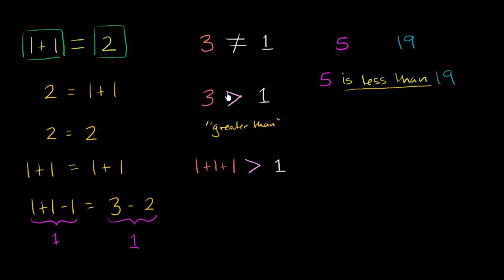And so we just have to think of a mathematical notation for writing is less than. Well, if this is greater than, it makes complete sense that let's just swap it around. Let's make, once again, the point point towards the smaller quantity and the big side of the symbol point to the larger quantity. So here 5 is a smaller quantity, so I'll make the point point there. And 19 is a larger quantity, so I'll make it open like this. And so this would be read as 5 is less than 19. So 5 is a smaller quantity than 19.